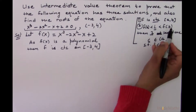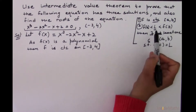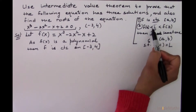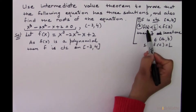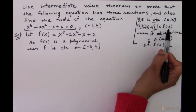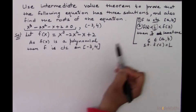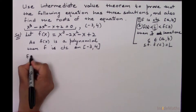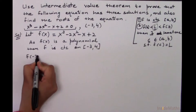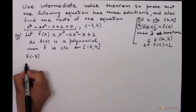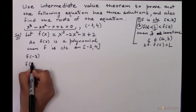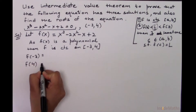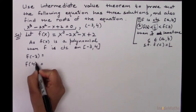The second condition is that there should be a point between f of a and f of b. In our case, f of a is f of minus 3 and f of b is f of 4. Now we have to find these two values.